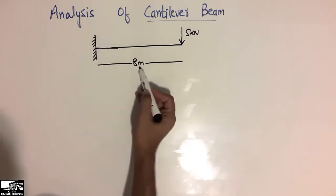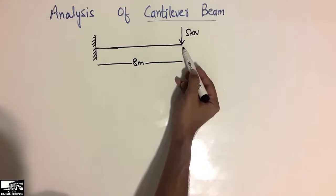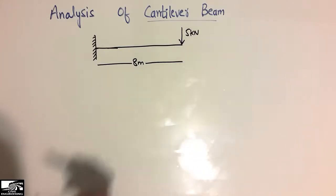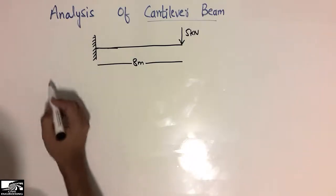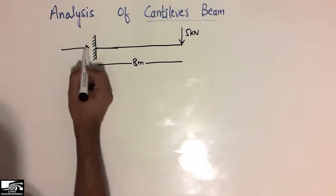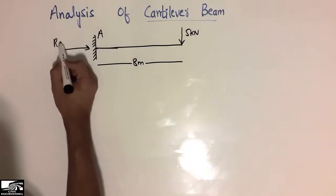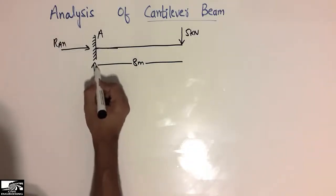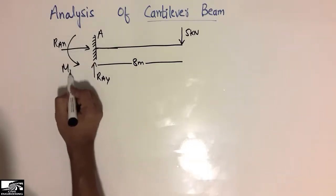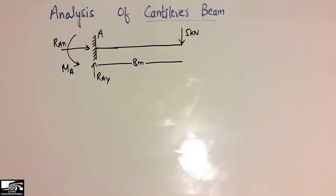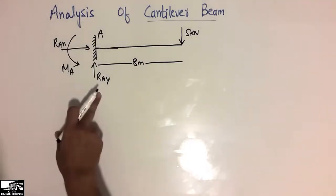In this lecture we will be analyzing this cantilever beam having a length of 8 meters and a concentrated load at the end of the beam of 5 kN. The fixed support can resist three types of reactions: the horizontal reaction RAX, the vertical reaction RAY, and the moment MA at that point.